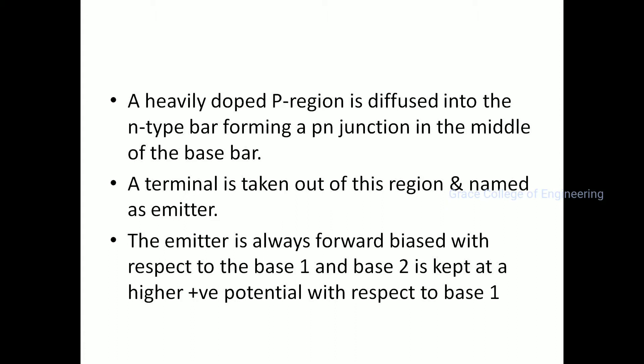A heavily doped P region is diffused into the n-type bar, forming a PN junction in the middle of the base bar. This forms the emitter terminal. The device has three terminals: emitter, base 1, and base 2.